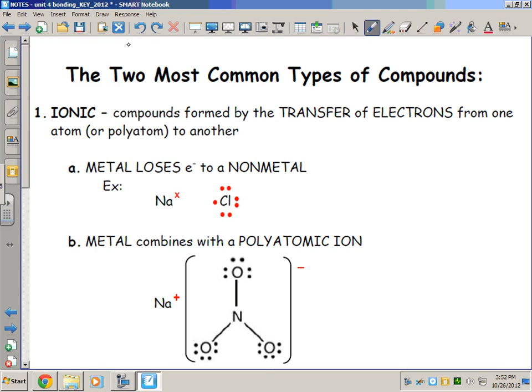We started this unit talking about why bonds occur between atoms. We said that bonds form because of an attraction between the protons of one atom and the electrons of another. Now we want to focus on how those bonds occur. To do that, we're going to look at two of the most common types of bonds and compounds. The first is ionic.